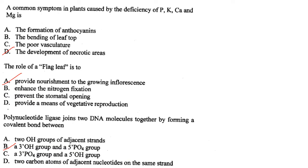A common symptom in plants caused by the deficiency of P, K, Ca and Mg is the development of necrotic areas. Answer is option D.